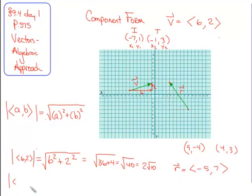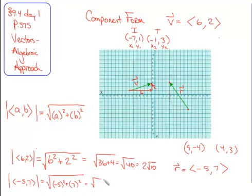The magnitude of vector R, ⟨−5, 7⟩, is the square root of (−5)² + 7² = √(25 + 49) = √74, which doesn't simplify. If they want a decimal, punch it into your calculator; otherwise, leave it in radical form. I'll make clear on quizzes and tests whether I want radical form or nearest tenth.